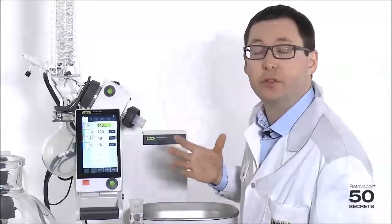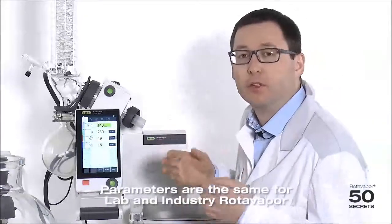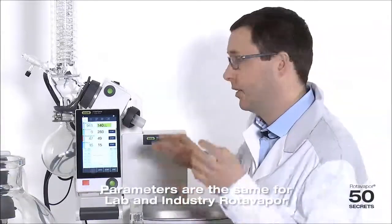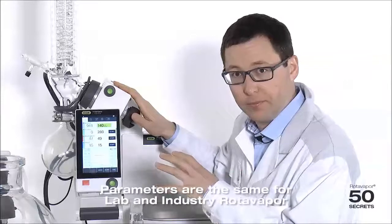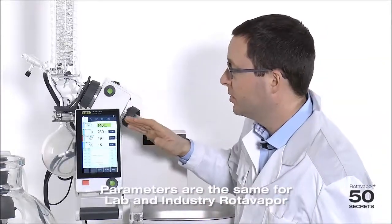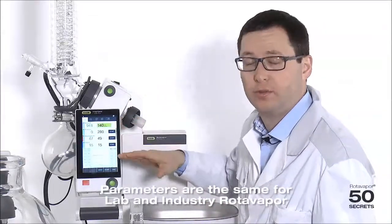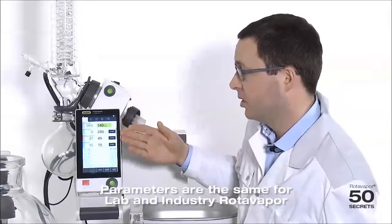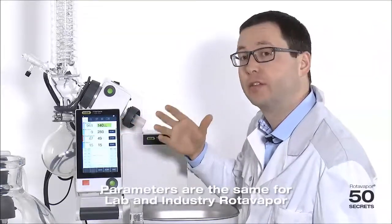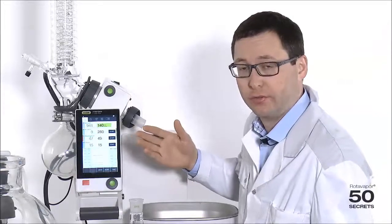So the first question usually is what happens to the parameters of the distillation I've done on the small roti. It's actually very simple. You can simply just copy and paste all the parameters such as vacuum, heating bath, chiller, temperature, etc. to the industrial rotavapor.